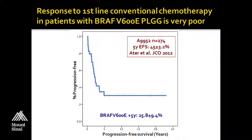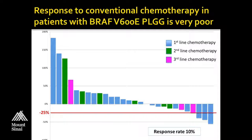In our own cohort — blue being patients who received one line of chemo, green two lines, and pink three lines — the response rate to traditional chemotherapy was only about 10%.